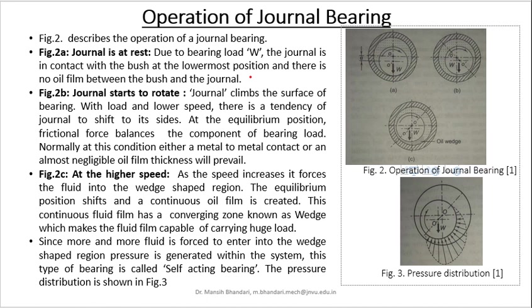Now let us understand the operation of journal bearing. It can be understood with the help of figure 2, where three positions of the journal bearing are drawn. Figure 2a shows the journal at rest, figure 2b shows journal starting to rotate, and figure 2c shows when the journal has attained higher speed. When the journal is at rest due to bearing load W, the journal is in contact with the bush at the lowermost position and there is no oil film. When the journal starts to rotate, it climbs up the surface of the bearing. With load and lower speed, there is a tendency of the journal to shift to its sides. At the equilibrium position, frictional force balances the component of bearing load.